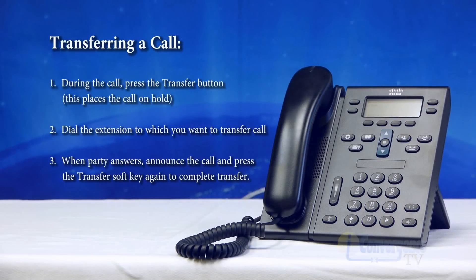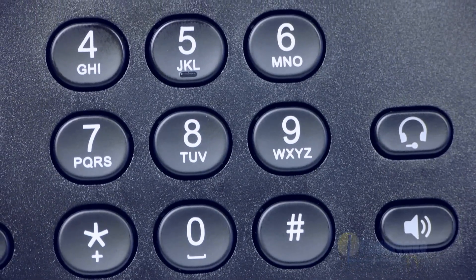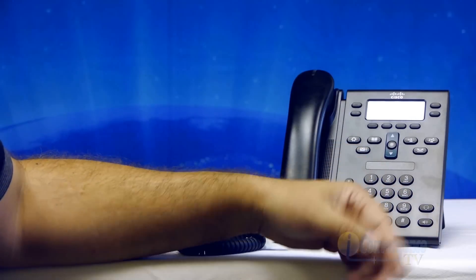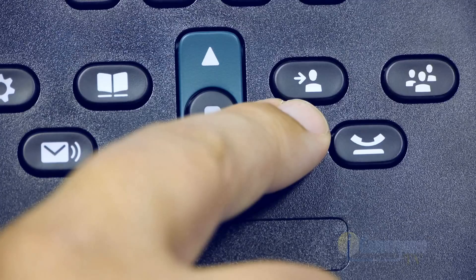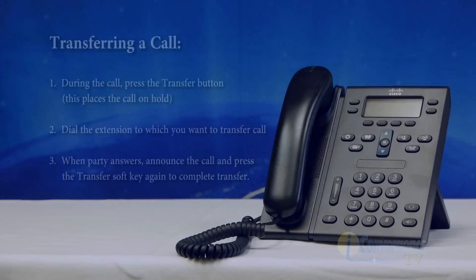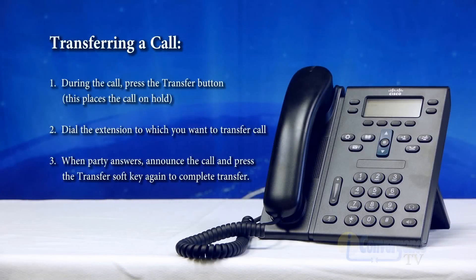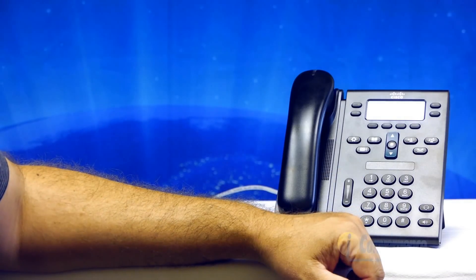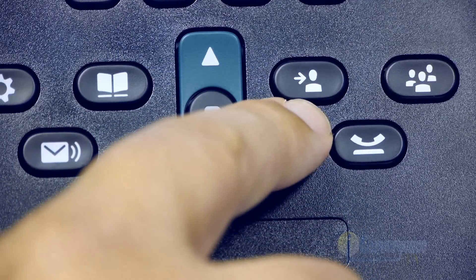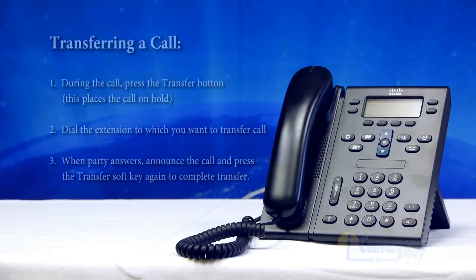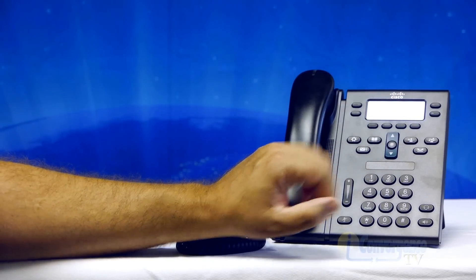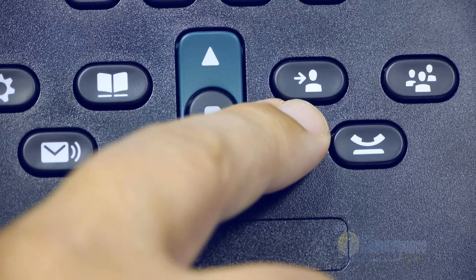There are two ways to complete a transfer. The first is an announced transfer — you dial the person's extension, wait for the third party to answer, announce that you're transferring a call to them, and then press the transfer button again to complete the transfer. The second way is a blind transfer — you dial the four-digit extension and press the transfer button without waiting for the third party to answer. Always remember, regardless of which type of transfer you do, you always start by pressing the transfer button and end by pressing the transfer button to complete the process.